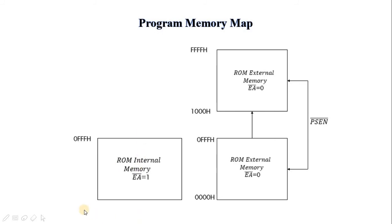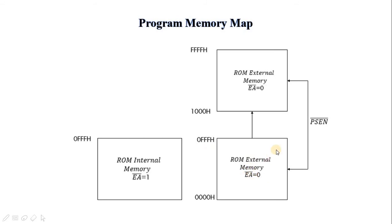Internal memory starting address is 0000, ending address is 0FFF. External memory uses the same address range, 0000 to 0FFF. Using the PSEN signal, the controller determines whether to access internal or external memory. If EA signal is active high, the controller accesses the internal memory. If EA signal is active low, the controller accesses the external memory with the help of PSEN signal.